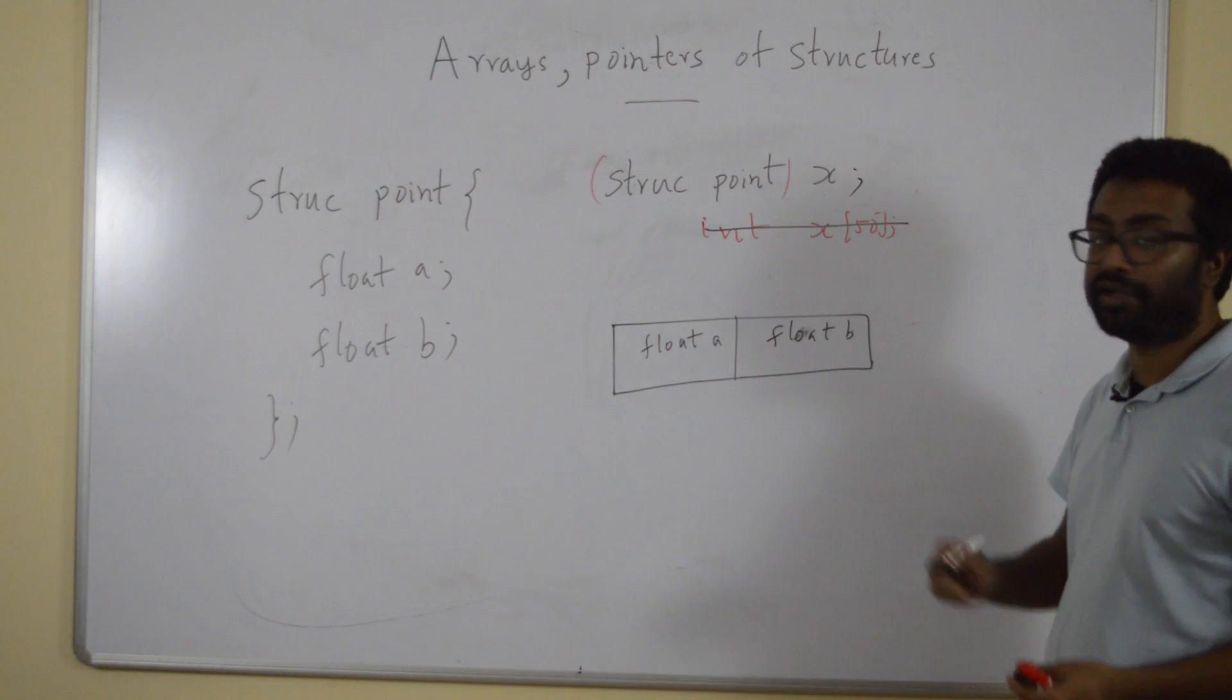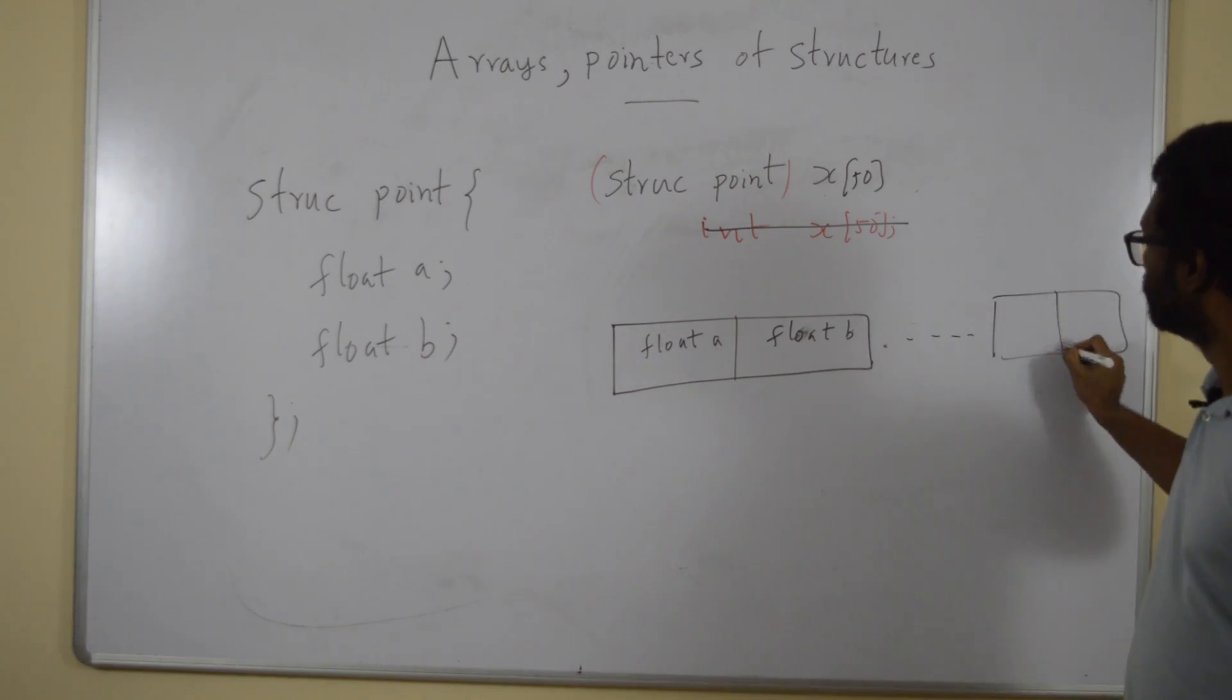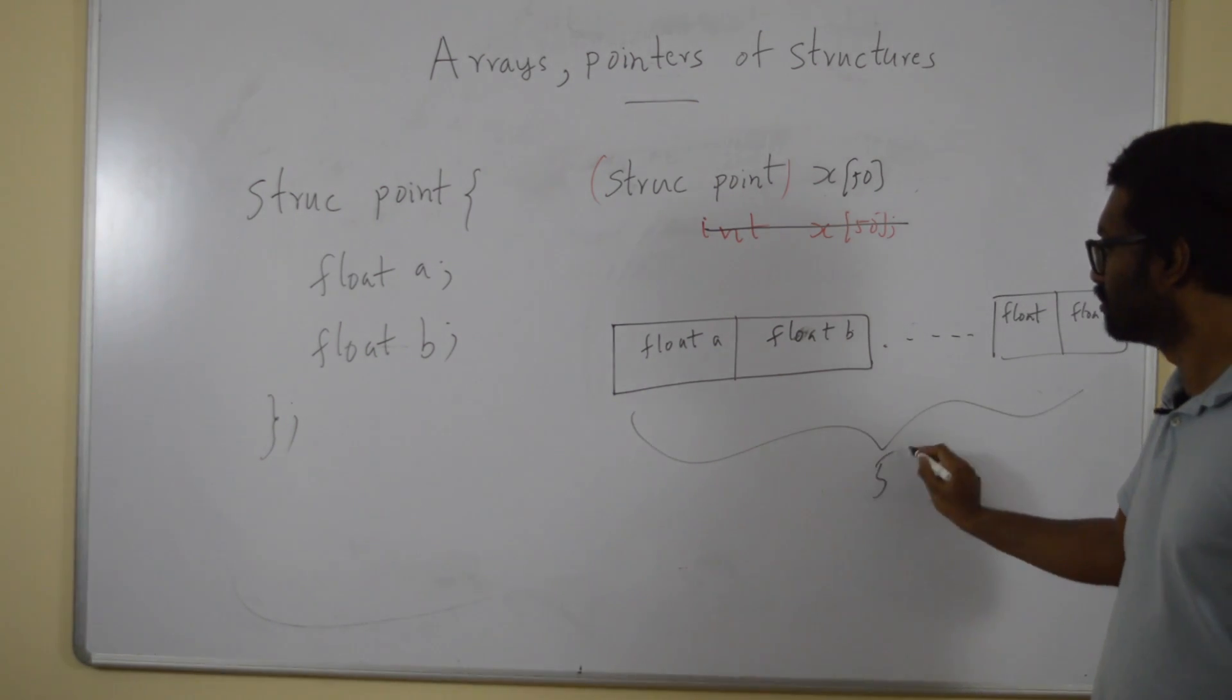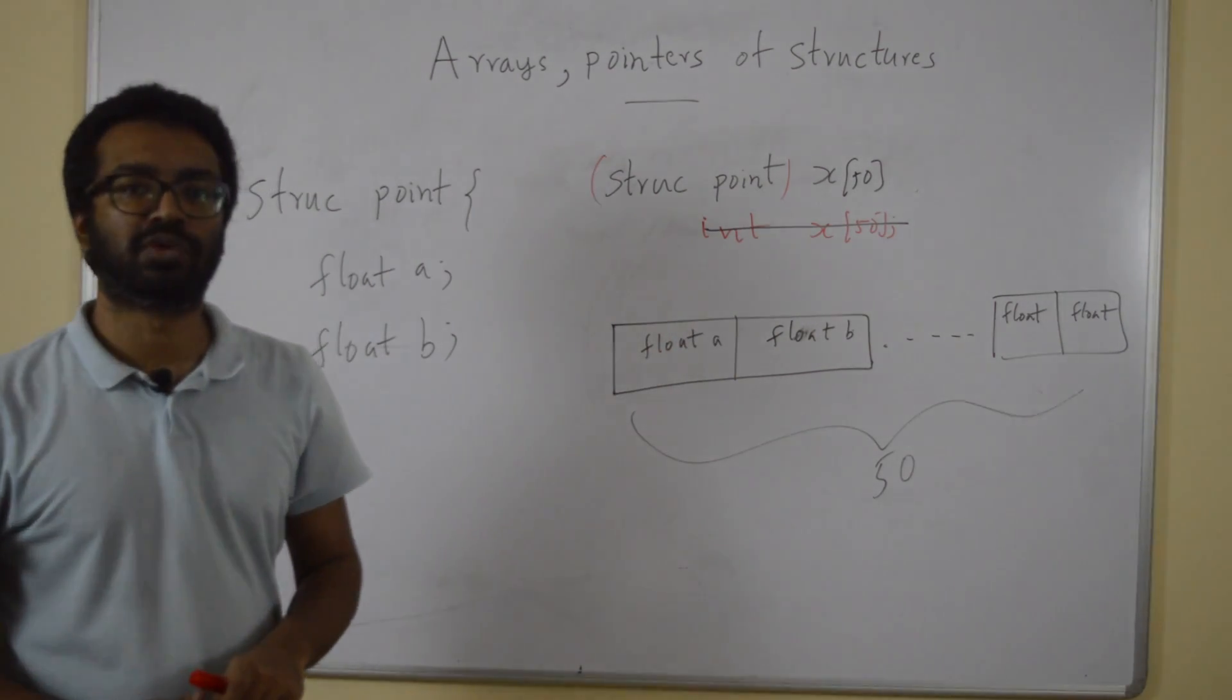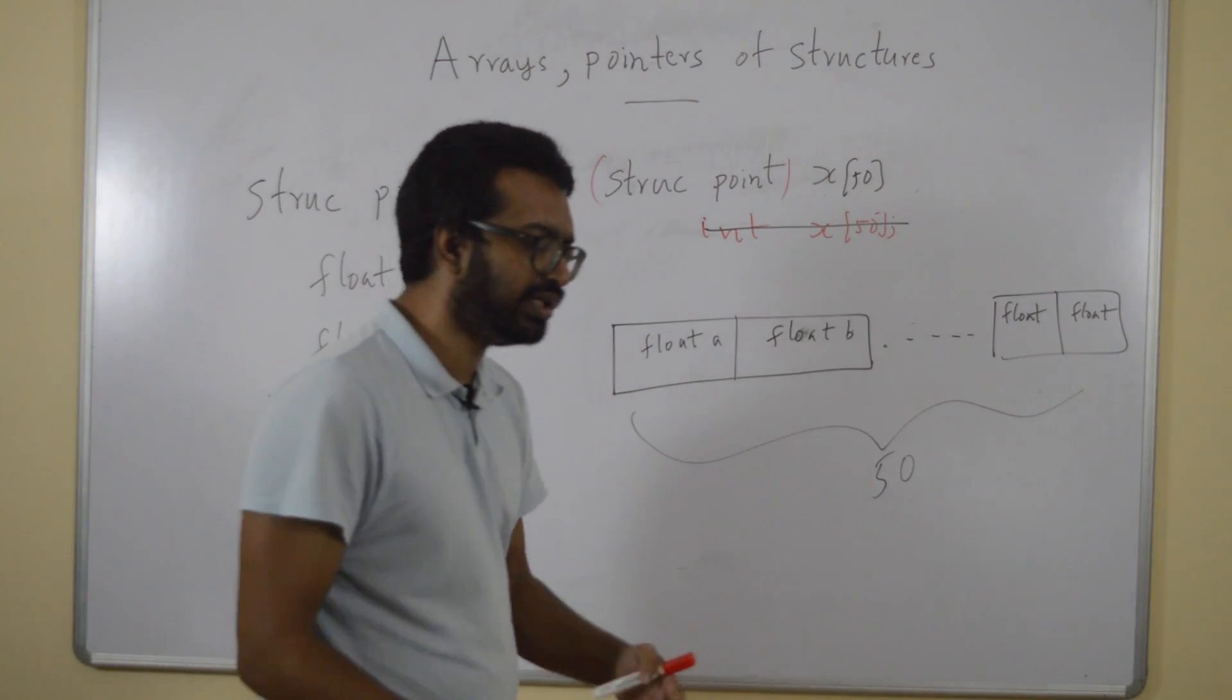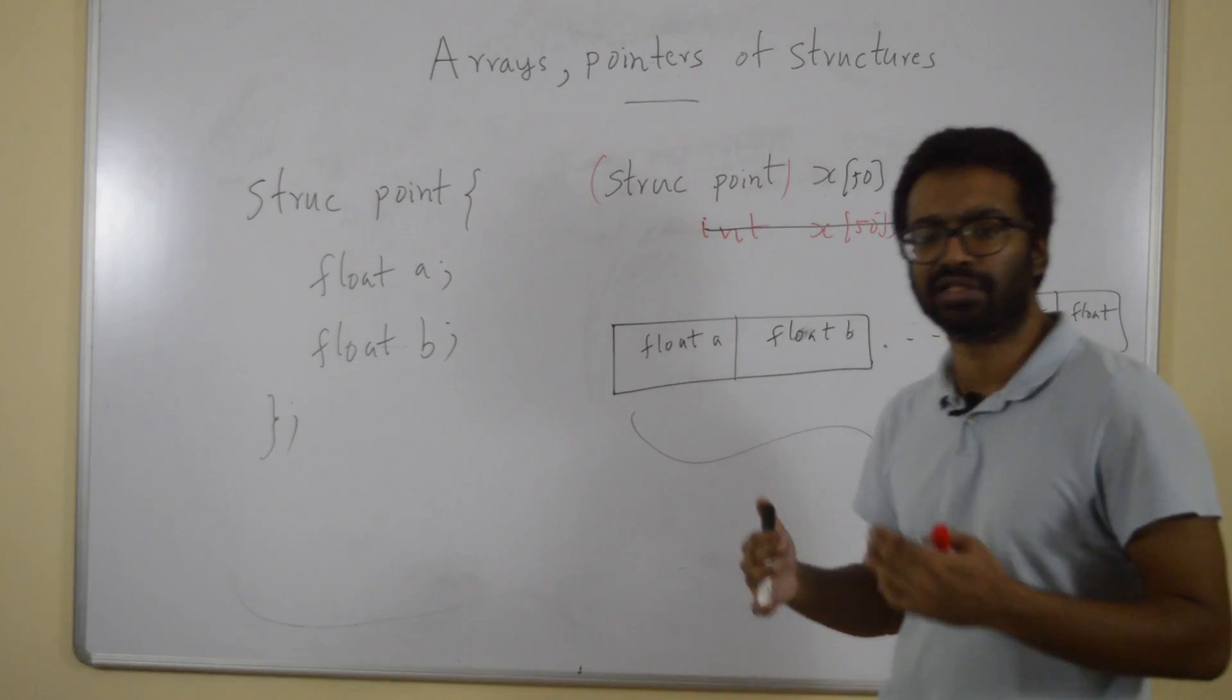Now, if I had 50, I would have had 50 of this allocated. This is simple. This is as clear as how an integer array, how a float array or a character array you declare and how the most natural way the memory is allocated.